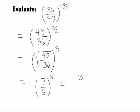Taking 7 over 6 to the 3rd power, we get our final answer of 343 over 216.